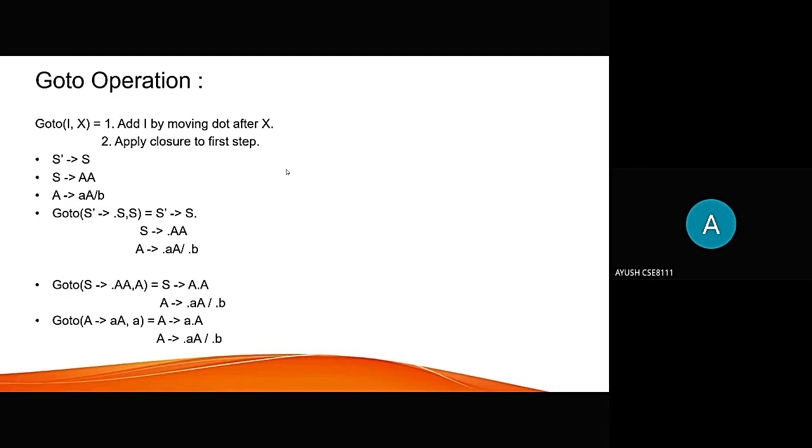This is the goto operation defined with an example. S' gives S, S gives A, A gives a slash b. So, goto of S' gives dot S, S is equal to S' gives S dot, S gives dot A, A gives dot a slash dot b. And goto of A gives a, A is equal to S gives A dot, A gives dot a slash dot b.